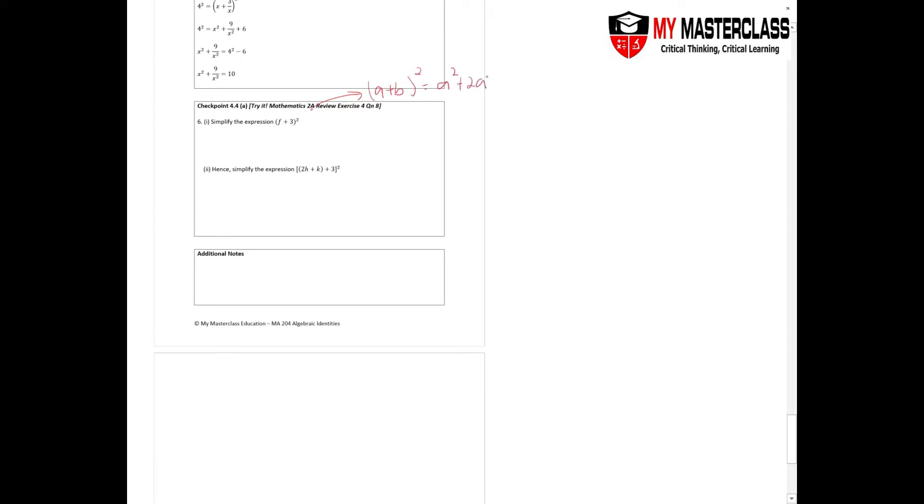You have a² + 2ab + b². Identify what's your a, identify what's your b. You should have f² + 2·f·3 + 3².